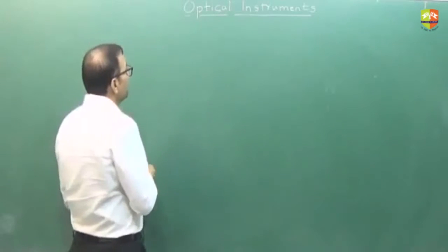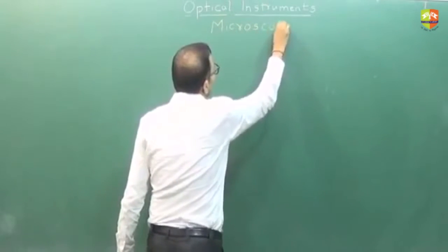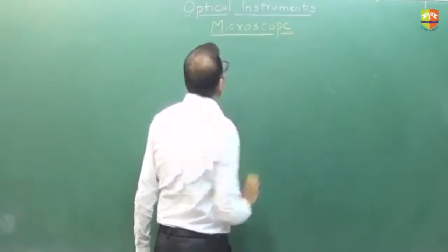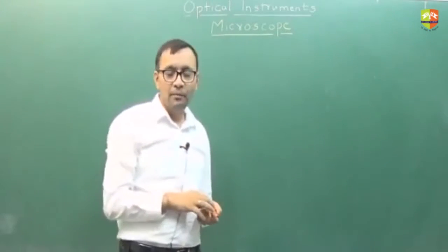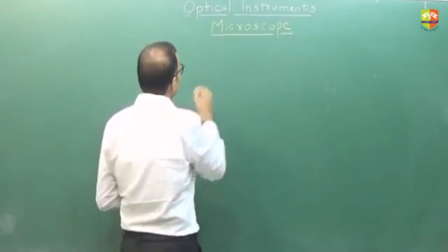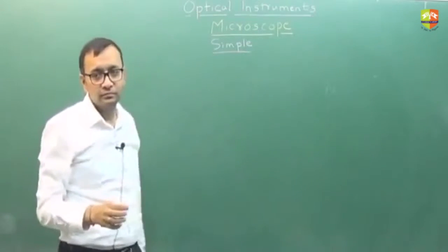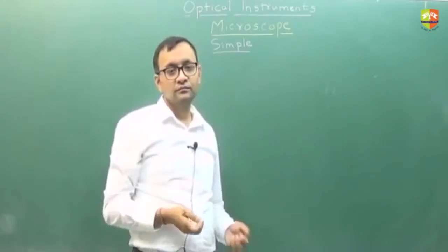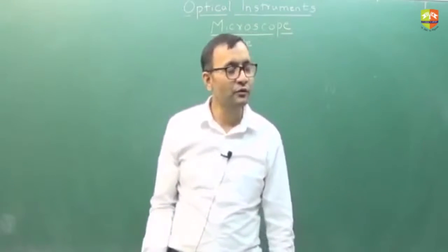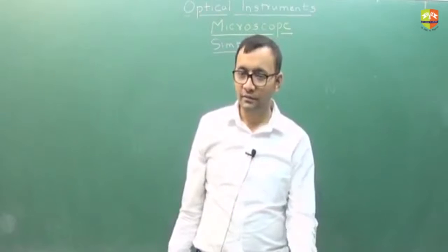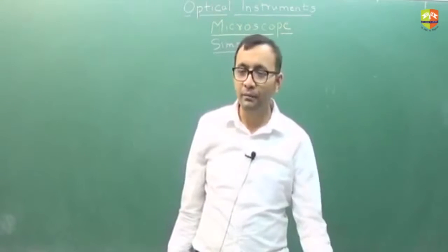There are two types of microscope in your syllabus: the first is the simple microscope and the other is the compound microscope. We will take the simple microscope first. A very simple microscope is just a magnifying glass — a convex lens. So a convex lens can be your microscope, and that is what the simple microscope is.